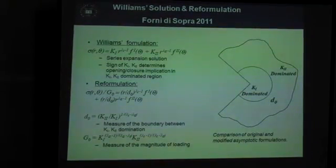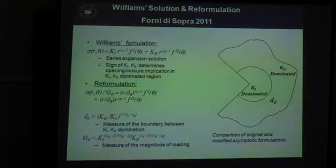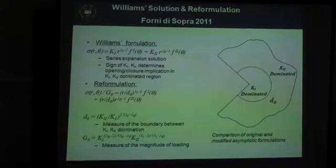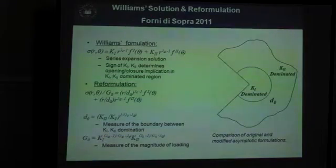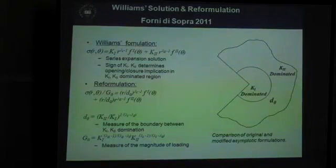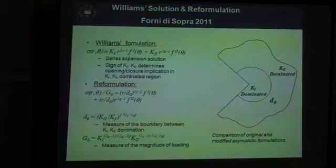And the candidates have insisted that it was definitely mode 1 dominated. There wasn't any clear reason why this was, so this led me to look at the Williams solution. And if you remember, there are two terms: there's an anti-symmetric term, mode 1 term, and mode 2. And they're both square root singular for a crack.